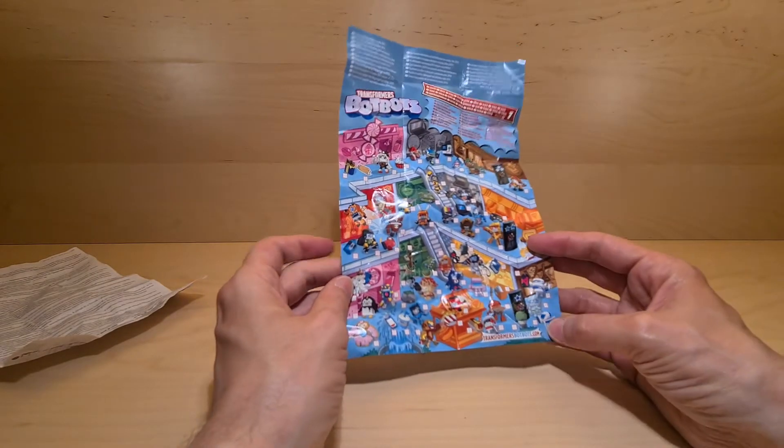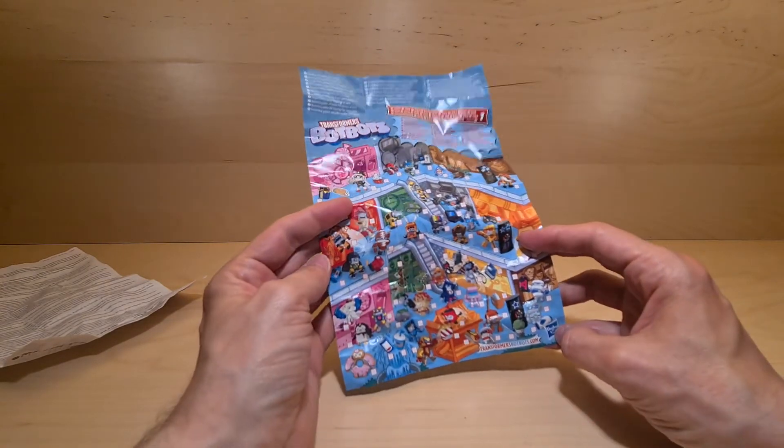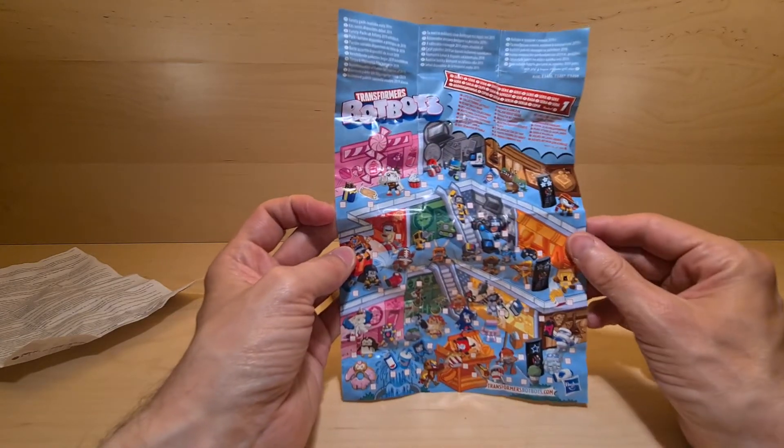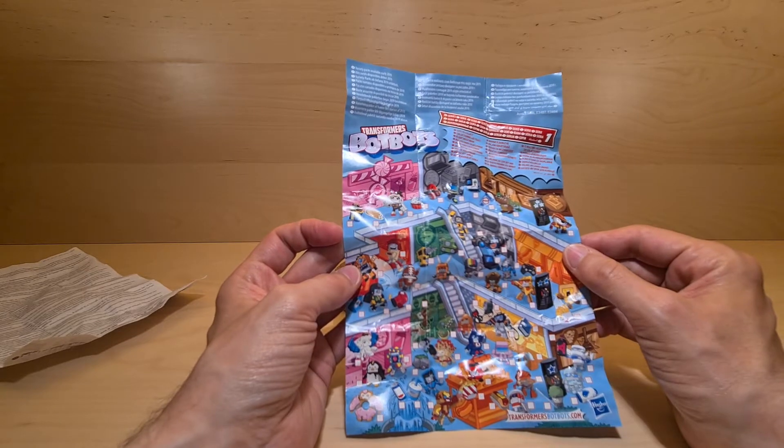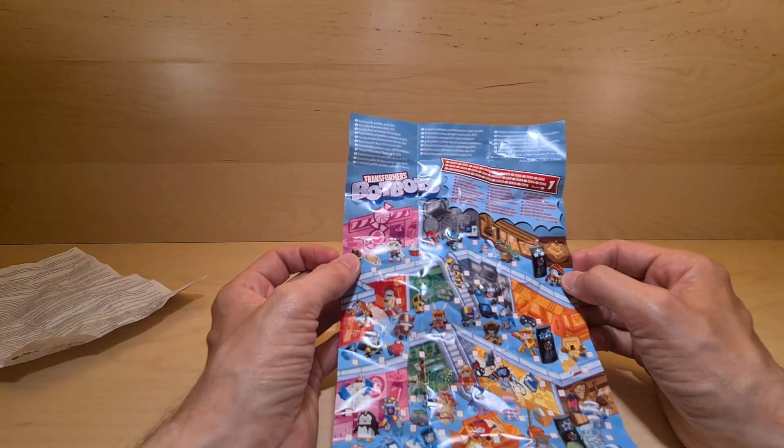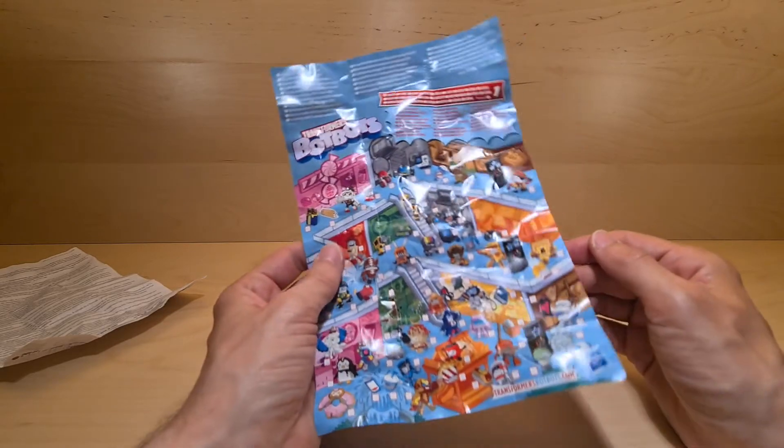Wow, there's loads. There's so many Bot-Bots. So many groups. Variety packs available early 2019, it says on top. Series 1, lots to collect. Lots to collect to keep you collecting.